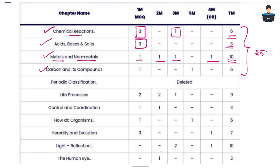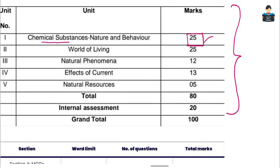That is the case-based equation. Carbon and its compounds are available. So let's prepare this base. First, chemistry: metals and non-metals are to be completed, then carbon and its compounds, chemical reactions and equations. Finally, you will have Acids, Bases and Salt. Note that periodic classification is a deleted portion.